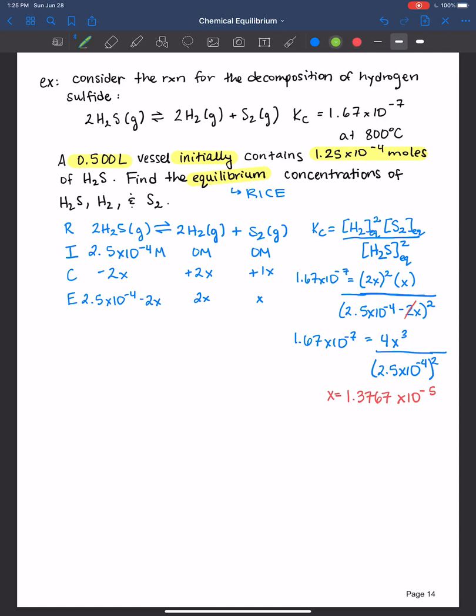We always need to check our work to see if x is small enough to ignore. So we take that number and we divide it by what? The initial concentration. And we multiply that by 100%. And the answer needs to be less than what? 5%. When you plug this in, you get 5.5%. Which means that x is not small enough to ignore.